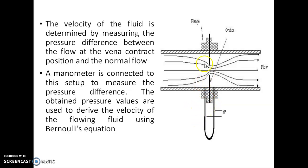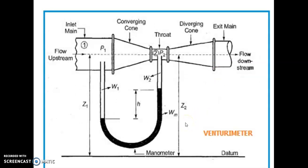Here, A1 is the cross-sectional area at section 1-1, and A2 is the area at the vena contracta. This is the principle of the orifice meter.